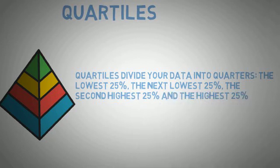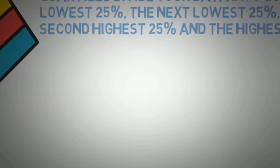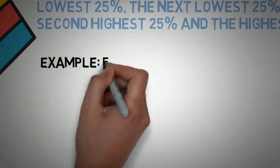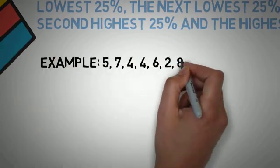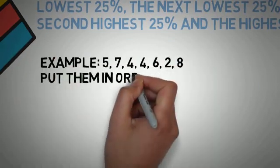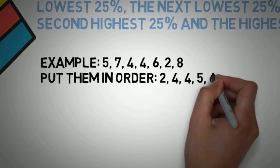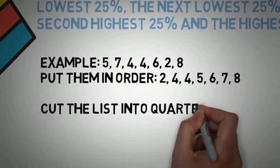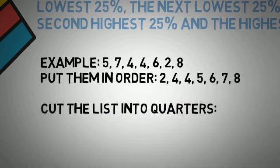Let's see an example. We have the numbers 5, 7, 4, 4, 4, 6, 2, 8. When we put them in order it gives us: 2, 4, 4, 5, 6, 7, 8. We then cut the list into quartiles, with Q1 being the lower quartile.